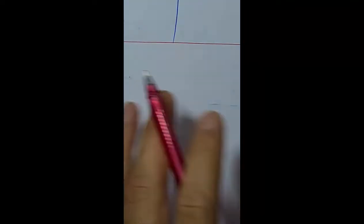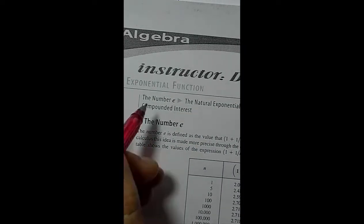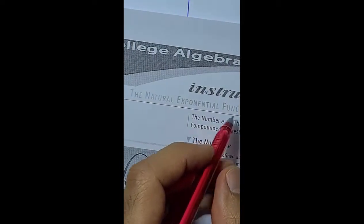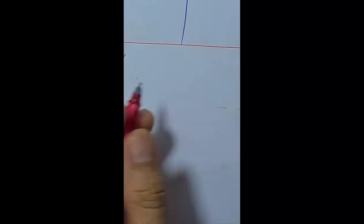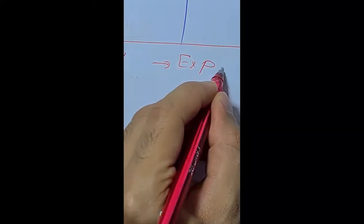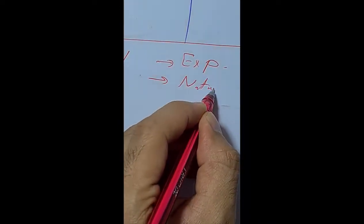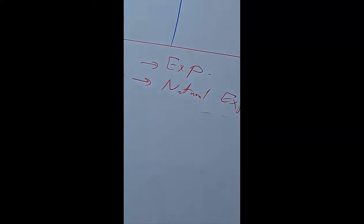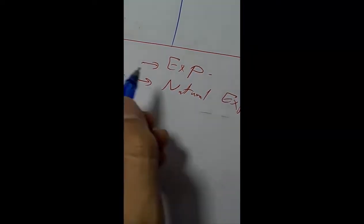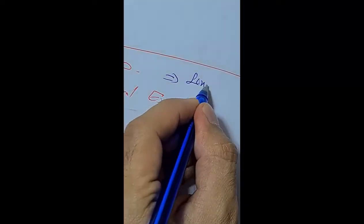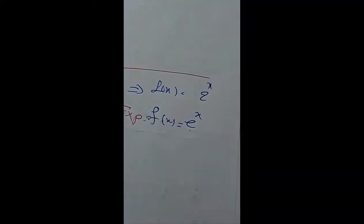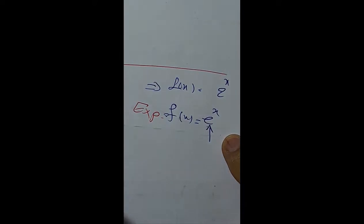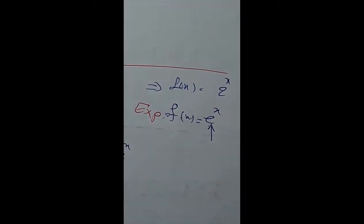Welcome back, dear students. I'm going to continue my session about natural exponential. What's the difference between exponential (section 4.1) and natural exponential (4.2)? In 4.1 we had a general exponential base, and now in 4.2 we have natural exponential where the base changes to e. That's the only difference — the base is e instead of a number like 2.